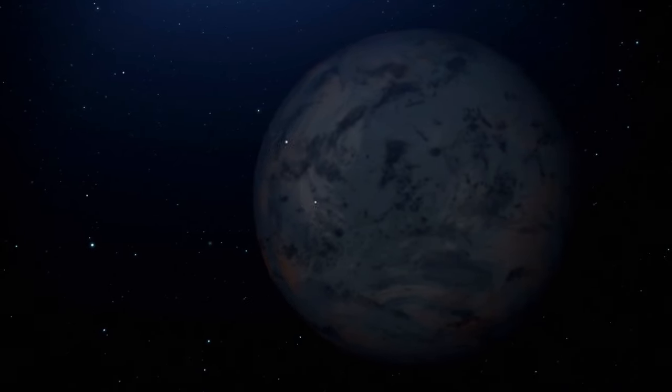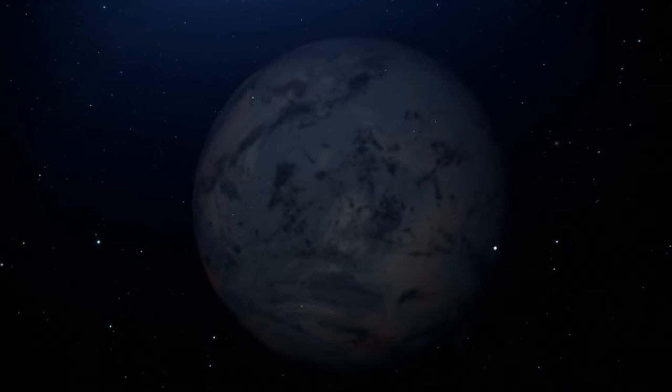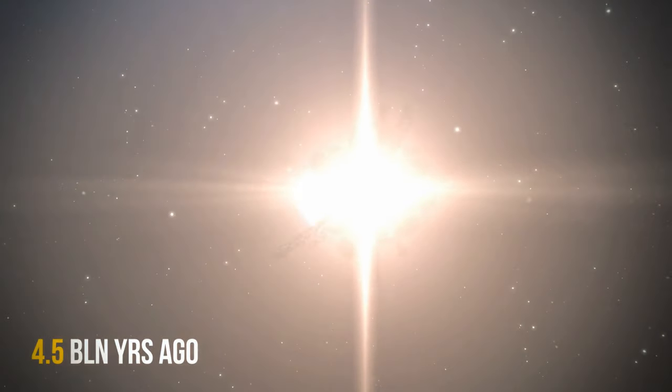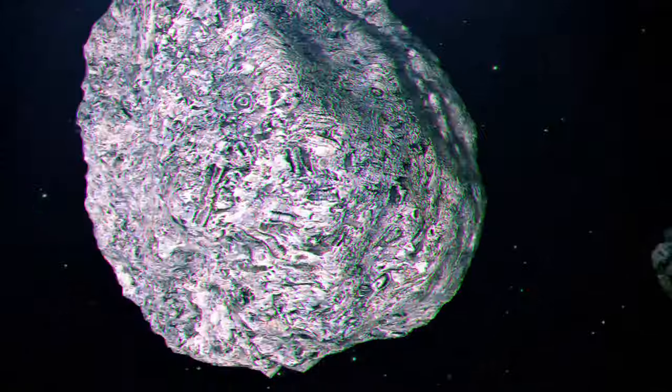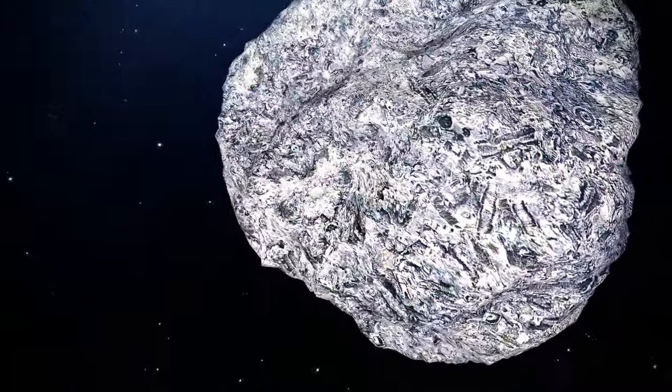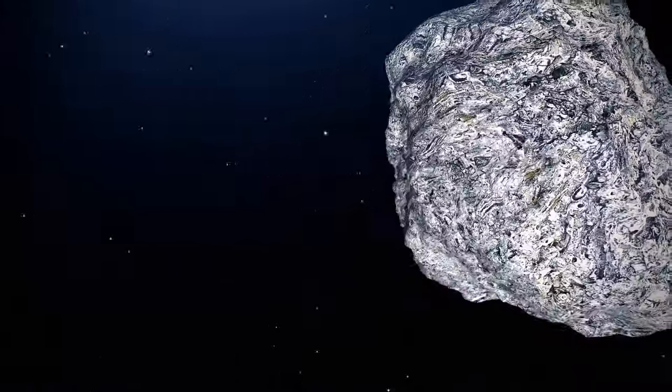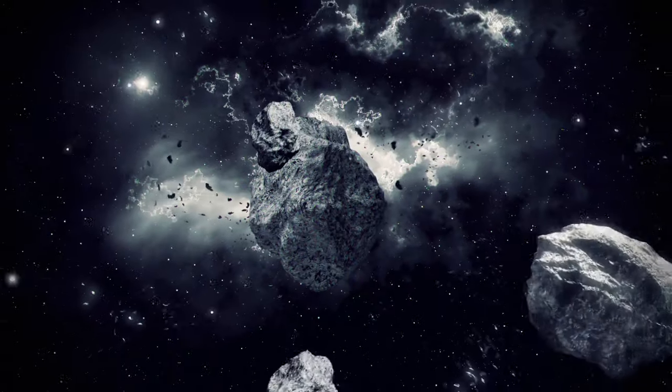Another theory, called the Capture Theory, claims that the Moon used to be an asteroid or some other wandering body. It formed somewhere else in the solar system. When it was passing by Earth, it got caught by our planet's gravity. But here is one catch. Our planet and the Moon have remarkable isotopic and chemical similarities.